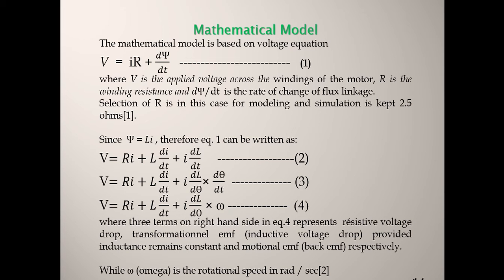Since ψ = Li, expanding gives: V = Ri + L(di/dt) + i(dL/dt)·ω. In equation 4, the first term represents the resistive voltage drop (Ri), the second is the transformational EMF or inductive voltage drop (L·di/dt), which applies when inductance remains constant, and the third is the motional EMF, also called the back EMF. Here ω is the rotational speed in radians per second.